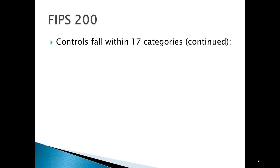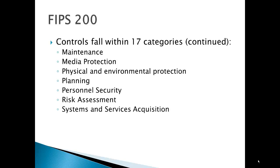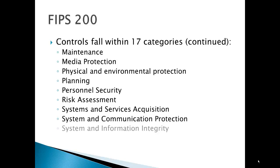Here are the remaining controls from the 17: maintenance, media protection, physical and environmental protection, planning, personnel security, risk assessment, systems and services acquisition, system and communications protection, and system and information integrity. These are all controls that FIPS 200 calls out as potential countermeasures for reducing the impact of a threat.